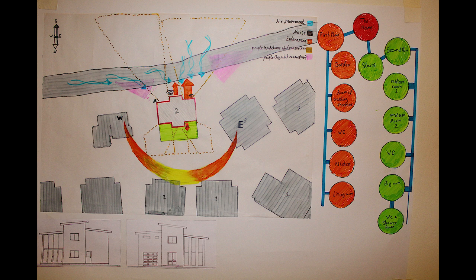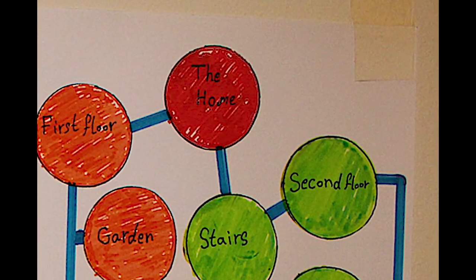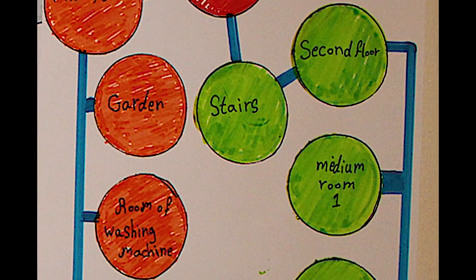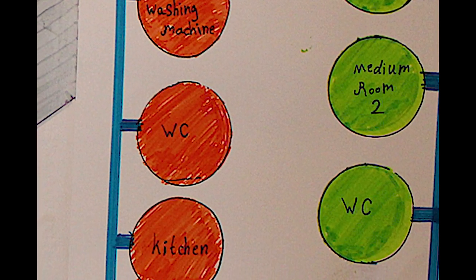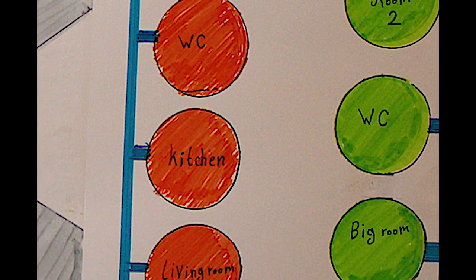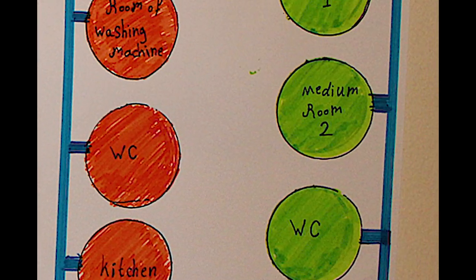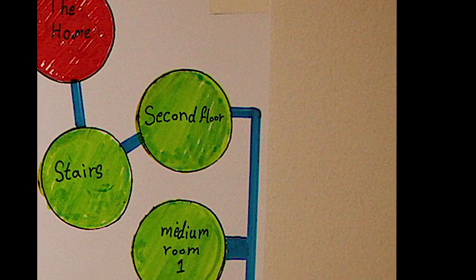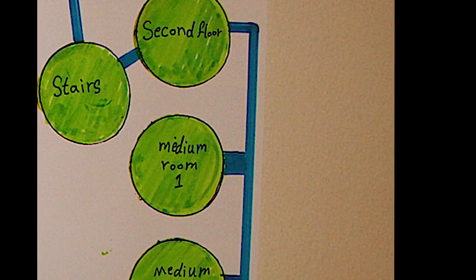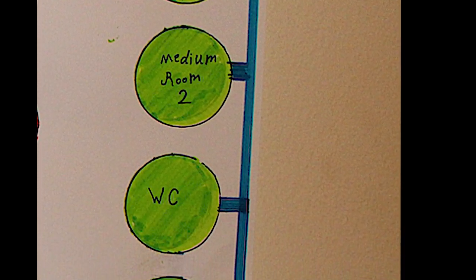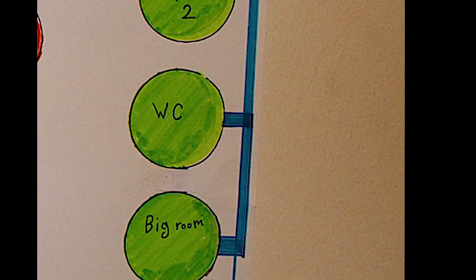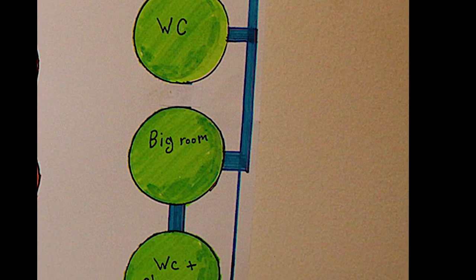Now we will look at the bubble diagrams. As you can see, the home has a first floor and a second floor. The first floor includes the garden, washing machine room, WC, kitchen, and living room. From the stairs you go to the second floor, which has medium room one, medium room two, a WC, and a large room with its own WC and shower room.